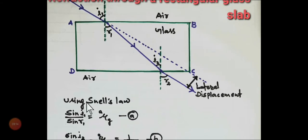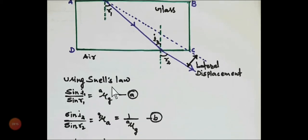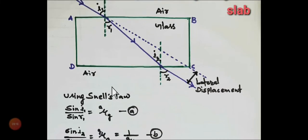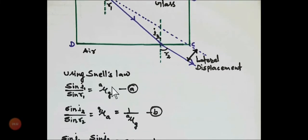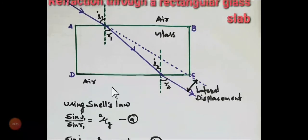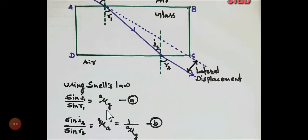Now using Snell's law we have to prove i1 is equal to r2. So using Snell's law, the second law, for the first interface AB, sin i divided by sin r1. This is equal to a constant.